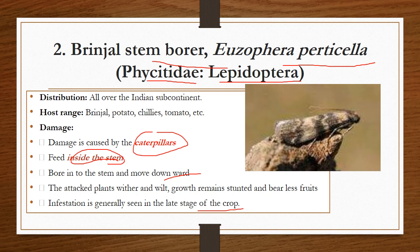The next important pest is the brinjal stem borer, Euzophera perticella, belonging to the family Phycitidae, order Lepidoptera. This pest is distributed all over the Indian subcontinent and also attacks other solanaceous crops such as tomato, chillies, and potatoes. Damage is caused by the larval stage only. The larvae feed inside the stem, which is why the common name is stem borer. These larvae bore into the stem and move downward from the tip to near the root zones.